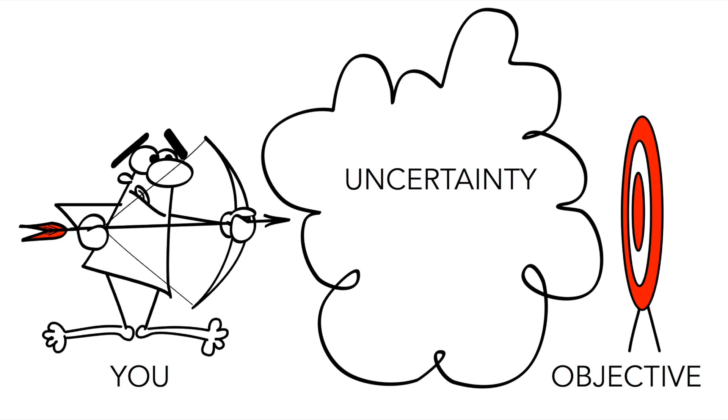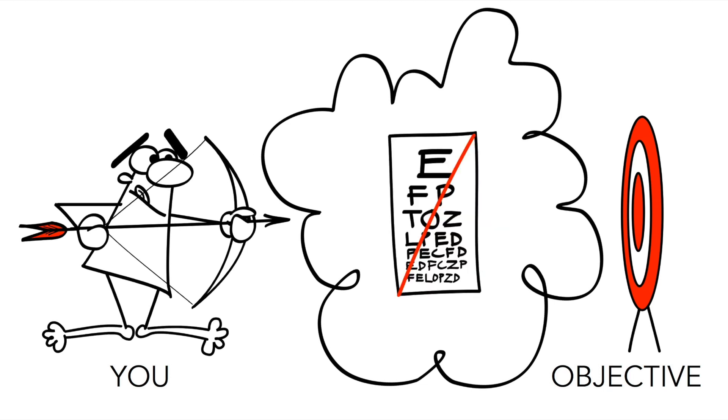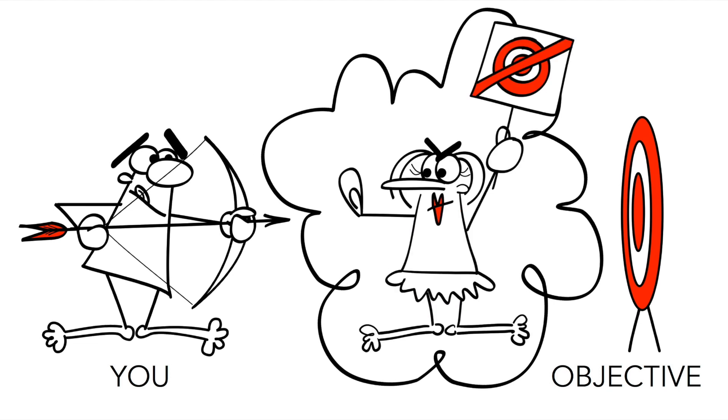Maybe the uncertainty you face is adverse weather conditions. How would heavy rain affect your accuracy? Maybe the uncertainty is more of a personal constraint. Maybe your eyesight isn't 20-20 anymore. How clearly can you see that target over there anyway? Maybe the uncertainty you face is a group of community protesters who oppose the shooting of innocent target signs.